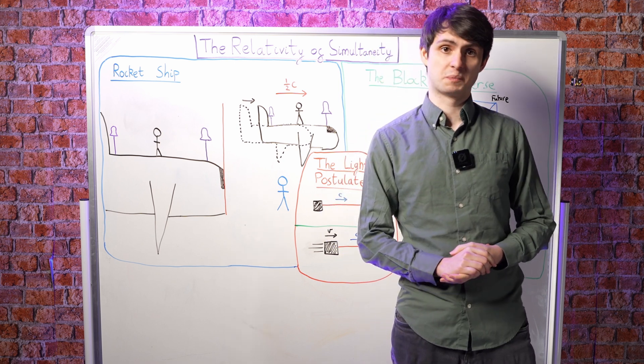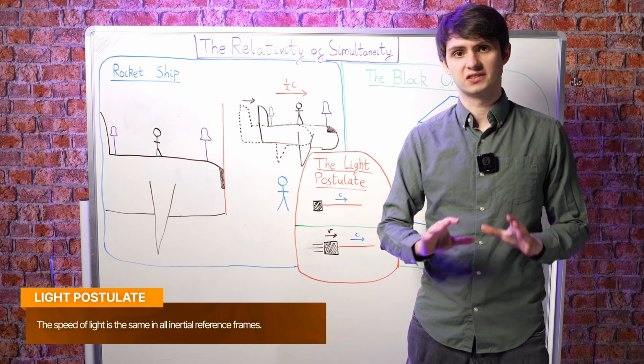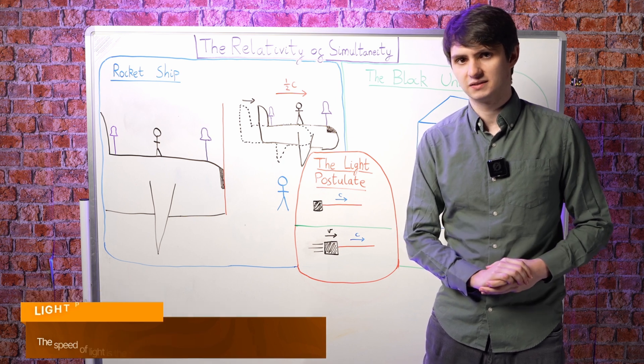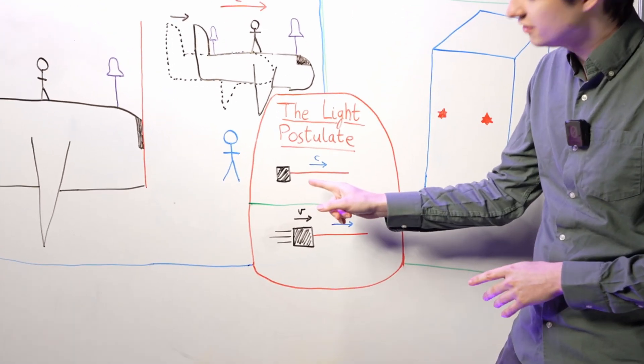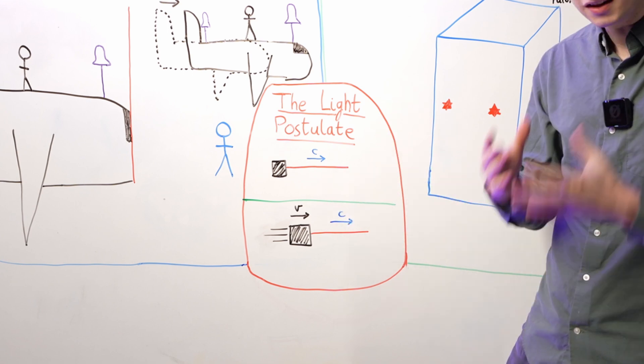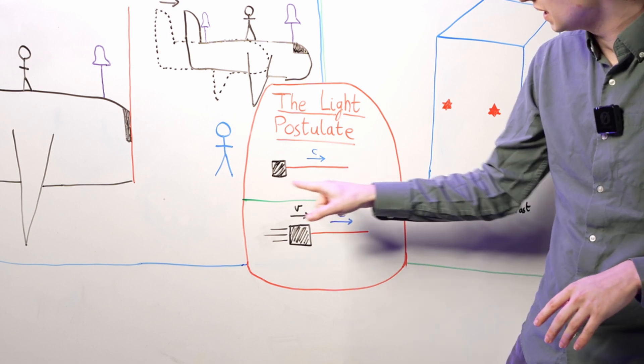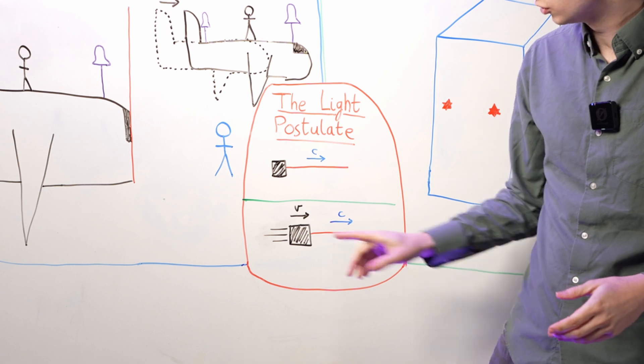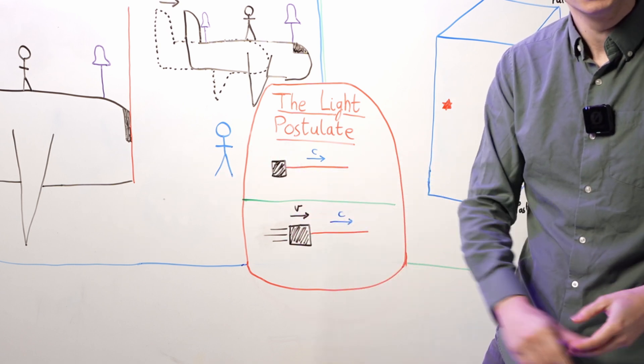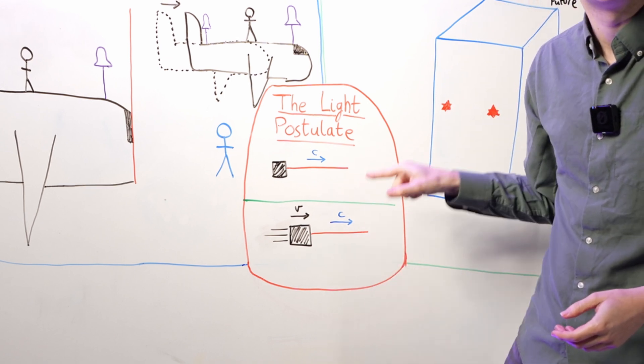One of the core postulates of special relativity is the light postulate, which says that the speed of light is the same in all inertial reference frames. What does this mean in practice? Imagine that you have a laser source that emits a thin red beam of light. What the light postulate tells you is that no matter how this source is moving, you will always measure the beam it emits to travel at the same speed. The source could be hurtling towards you, away from you, oscillating side to side, but you will always measure the speed of the light that it emits to be the same c.